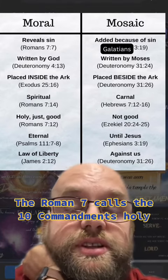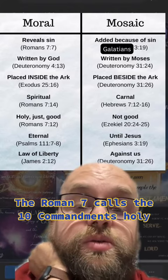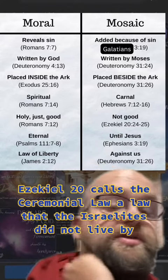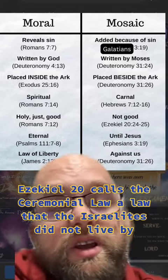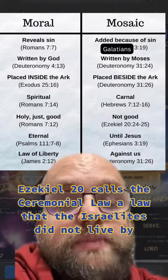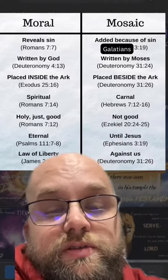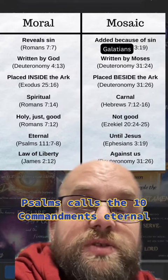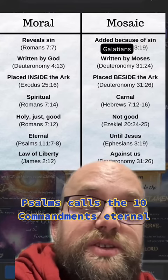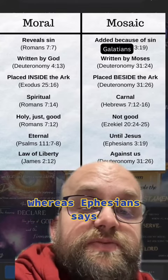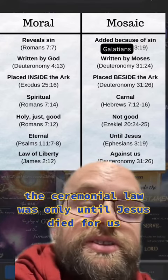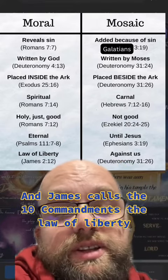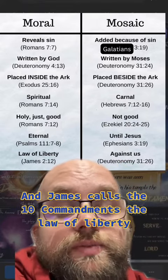Romans 7 calls the Ten Commandments holy, just, and good. But Ezekiel 20 calls the Ceremonial Law a law that the Israelites did not live by, only because they refused to. Psalms calls the Ten Commandments eternal, whereas Ephesians says the Ceremonial Law was only until Jesus died for us. And James calls the Ten Commandments the Law of Liberty.